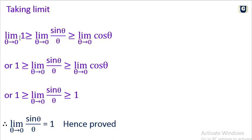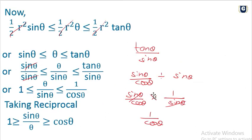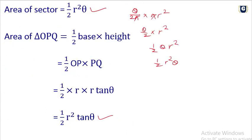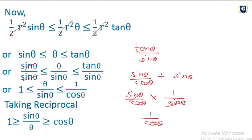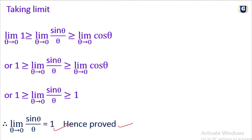Now 1 over 1 is 1, and limit as theta tends to 0 of cos theta is 1. By the squeeze theorem, since the expression is squeezed between 1 and 1, the value equals 1. Therefore limit as theta tends to 0 of sin theta over theta equals 1.